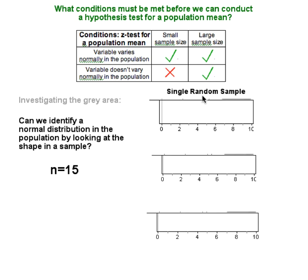What I've constructed here is three different populations that are hidden from view. I'm going to take samples of size 15 from each of these populations and I will do this several times. I want you to see if you can identify the normal distribution in the population just by looking at the shapes of the samples.